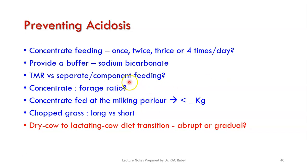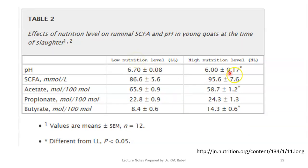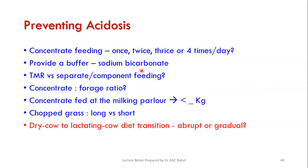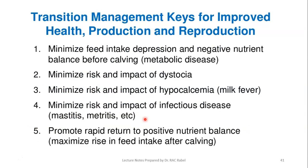To prevent acidosis, it is important to divide concentrate feeding into two or even three times per day if practically possible, rather than giving all concentrates at once. Giving all concentrates at once causes a sudden spike in acidity. Splitting the feeding allows the rumen to handle fermentation more effectively.